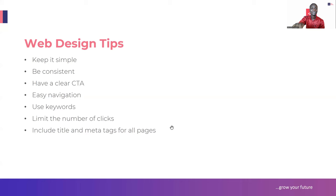Another tip is easy navigation - that's why you need your menu. On your menu, people should be able to get to other pages on your website. Use keywords - later we'll talk more about keywords. Then limit the number of clicks, especially for e-commerce websites. When people want to buy a product, don't let them click through different pages before they can buy. Your process to purchase should be simple - limit the number of clicks.